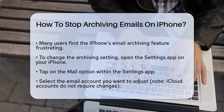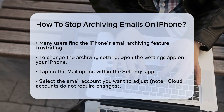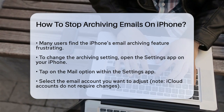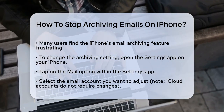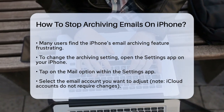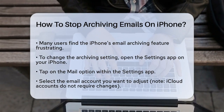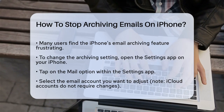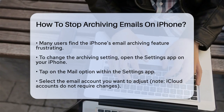First, you need to open the Settings app on your iPhone. This is where you can tweak various settings, including those for your email accounts. Once you're in the Settings app, tap on Mail.